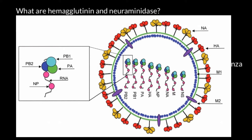We also see the NP protein, which stands for nucleic acid protein, and each RNA strand here would bind to this NP protein. Looking at the structures, we can see the capsid here.